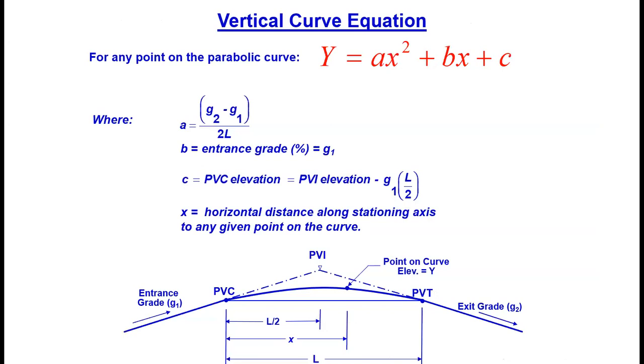Here's our general parabolic equation: y = ax² + bx + c. We're going to specify it for this particular curve. A equals (g2 - g1) divided by 2 times the length. So g2 is -2.2286, we're putting the grades in percent, and our length in stations. That's g2 minus g1, which is 3.5035. On our denominator we've got 2 times the length, that's 10.9 stations. We're going to do that division and come up with an a of -0.26294.